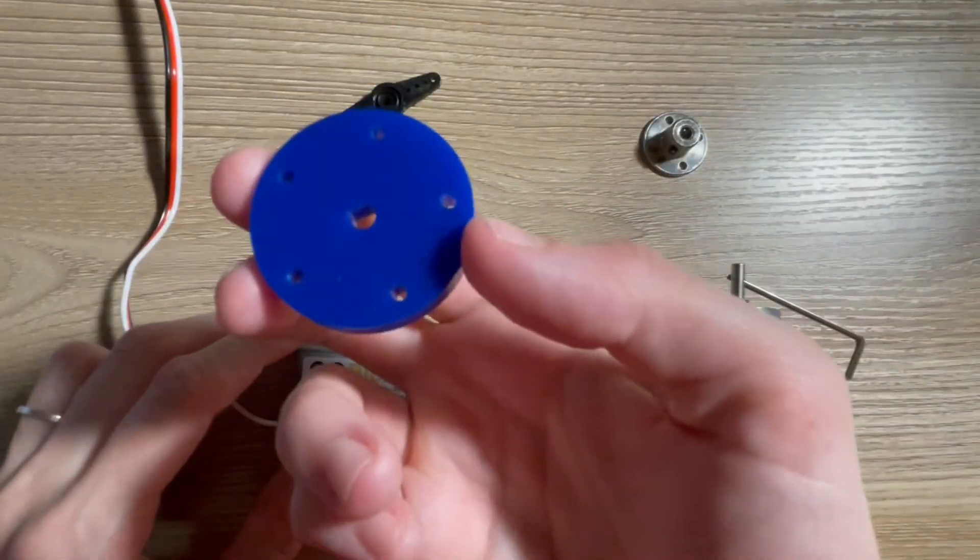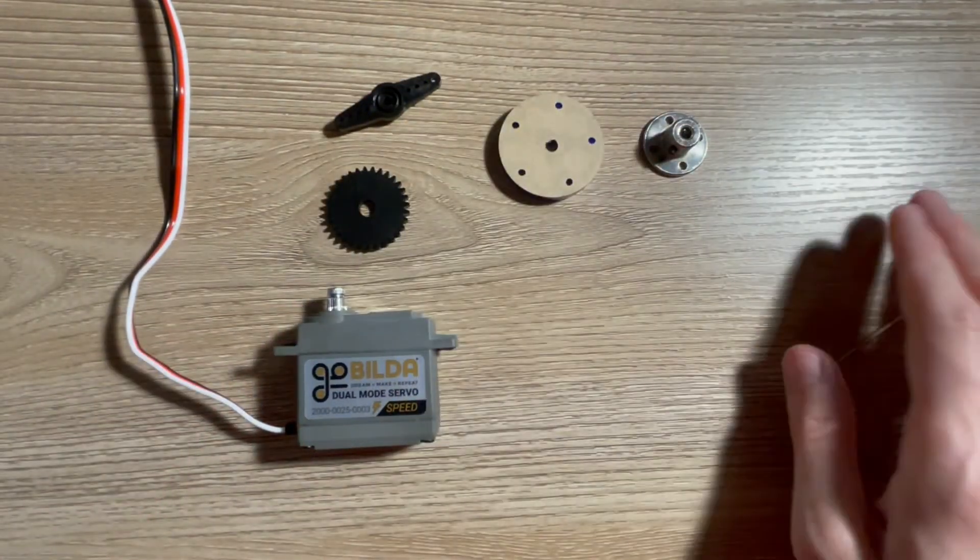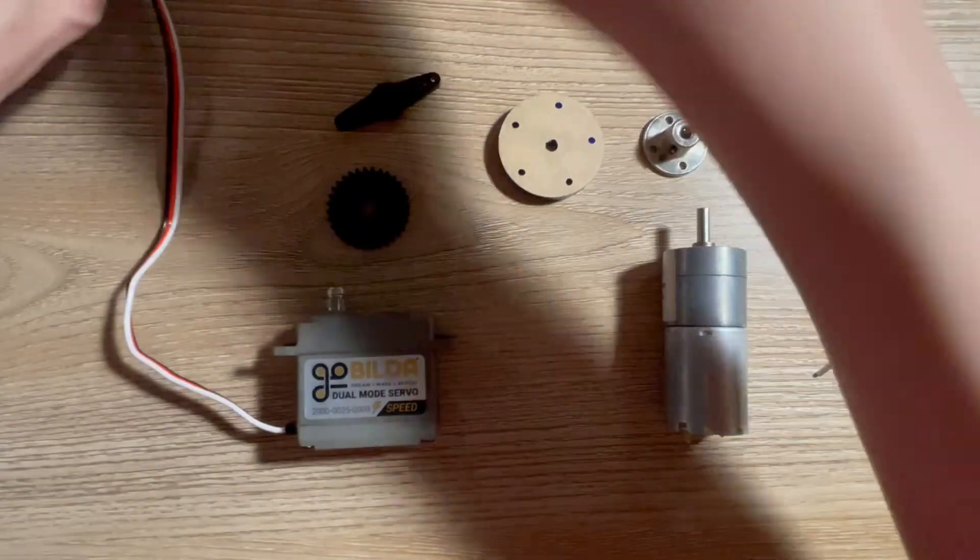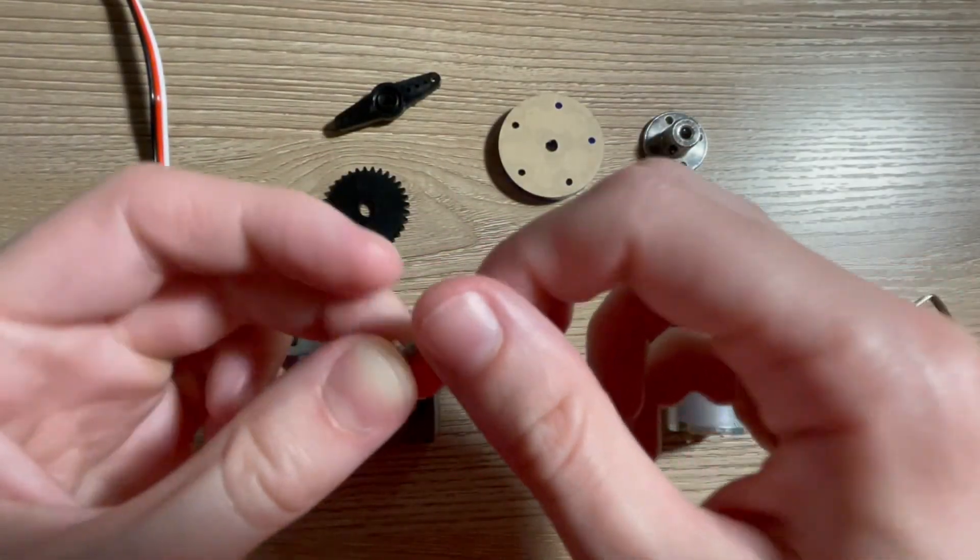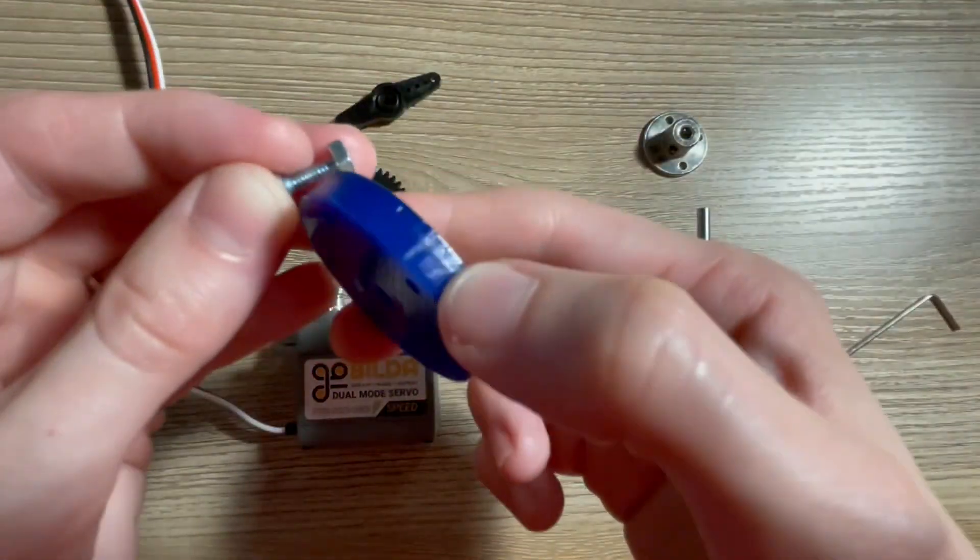Same with this one, it already has the holes laser cut. And when you have a screw and a nut, the nut will hold the screw in place, even though this is a non-threaded hole here.